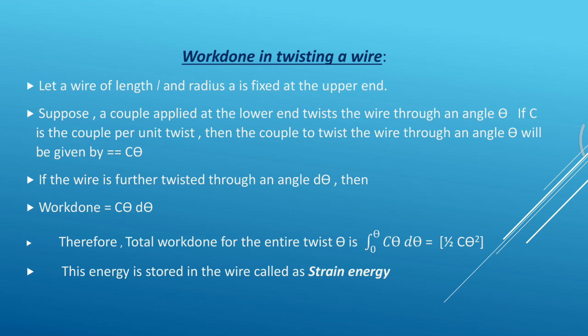What is the amount of work done in twisting a wire? Consider a wire of length L and radius A which is fixed at the upper end. When a couple is applied at the lower end, the upper end is fixed and the wire twists through an angle theta. If C is the couple per unit twist, then the couple to twist the wire through an angle theta is given by C theta. If the wire is further twisted through a small angle d theta, then the work done is C theta d theta.